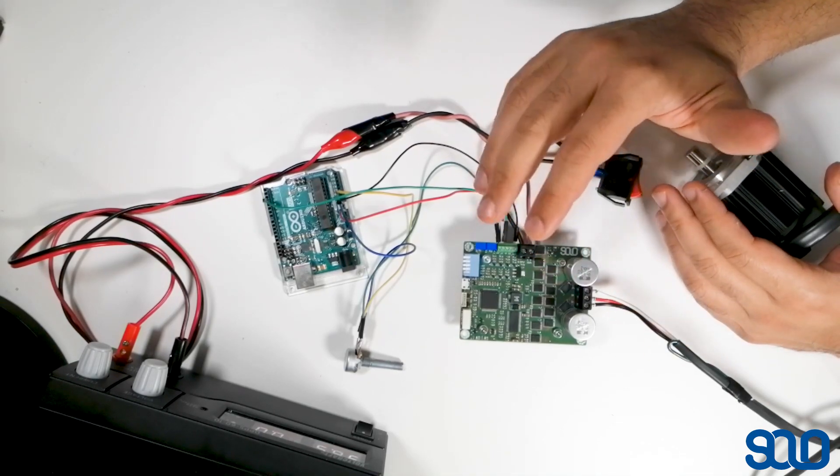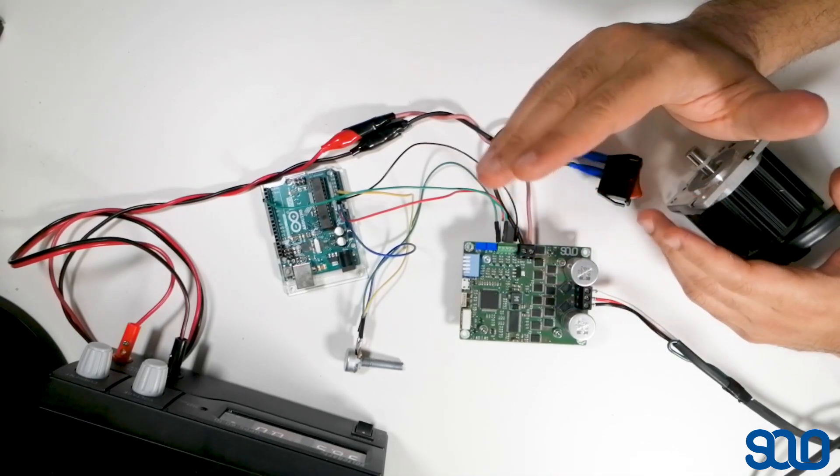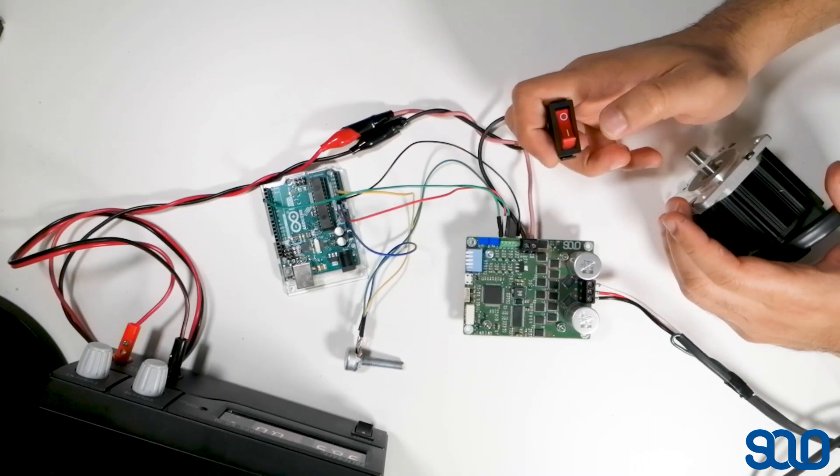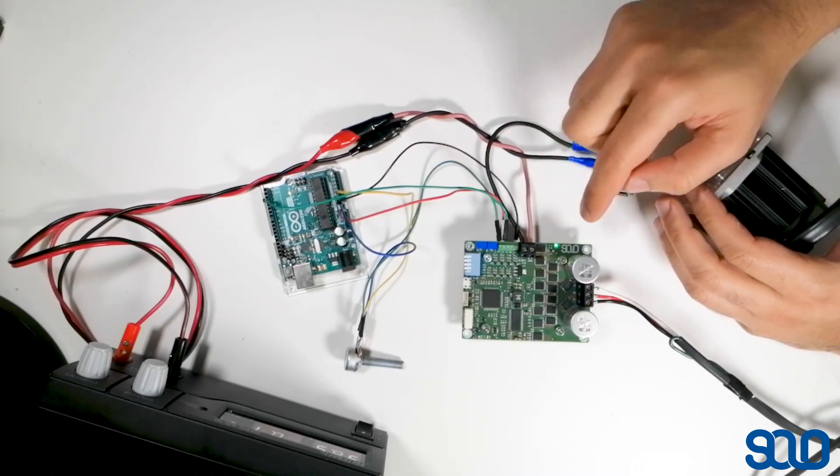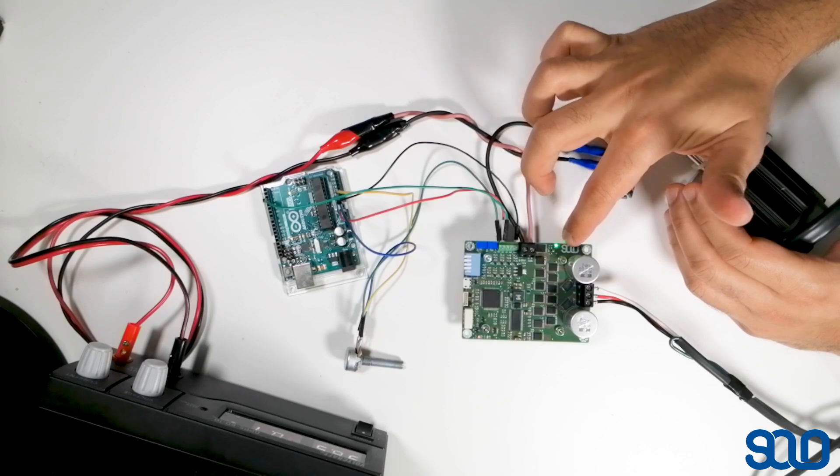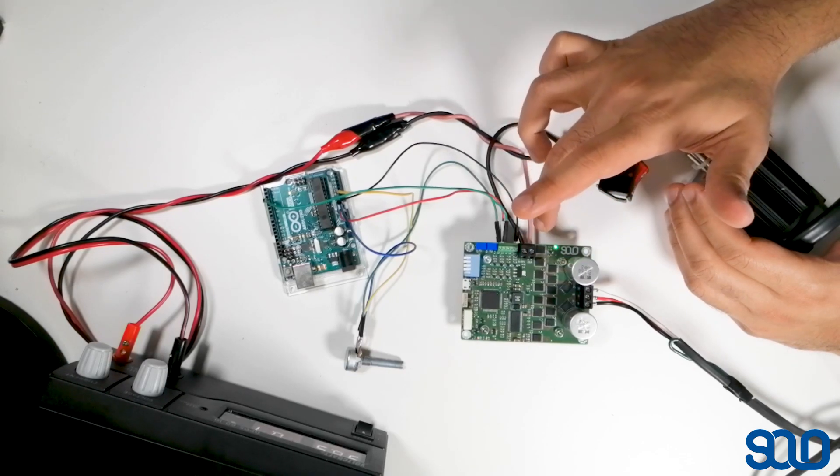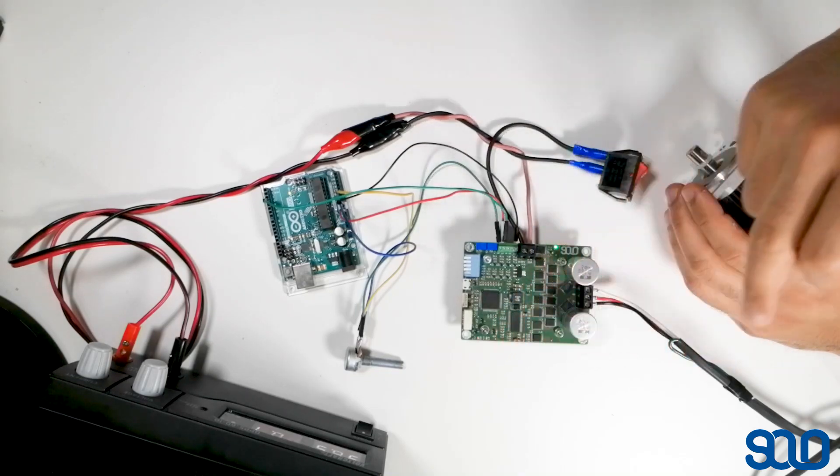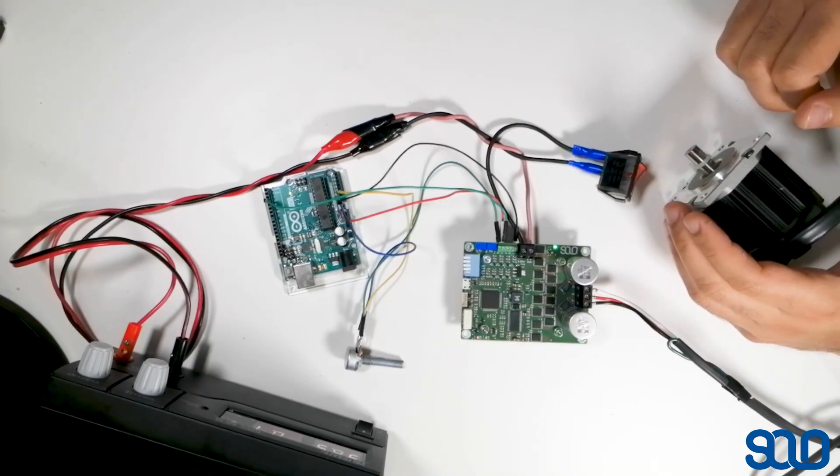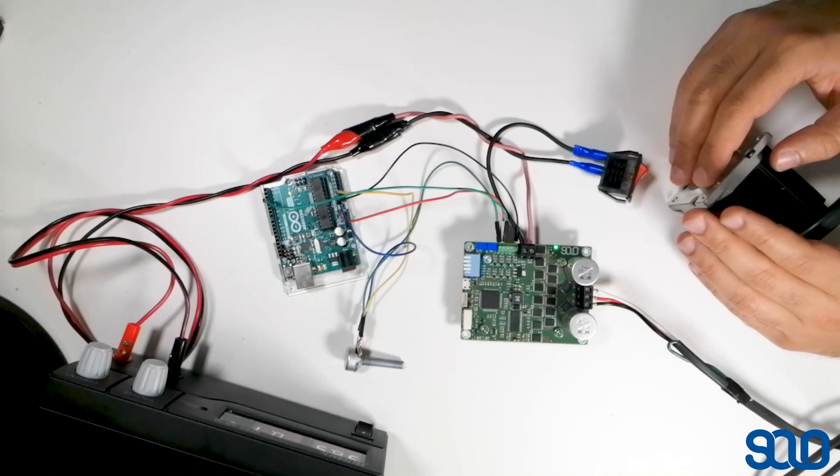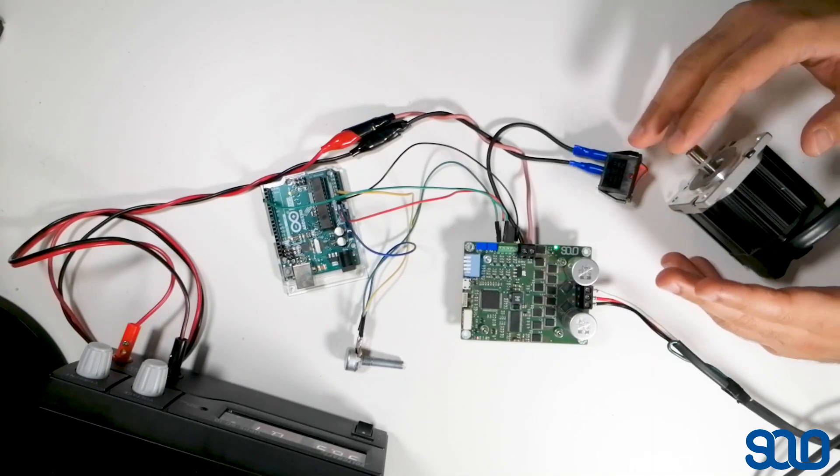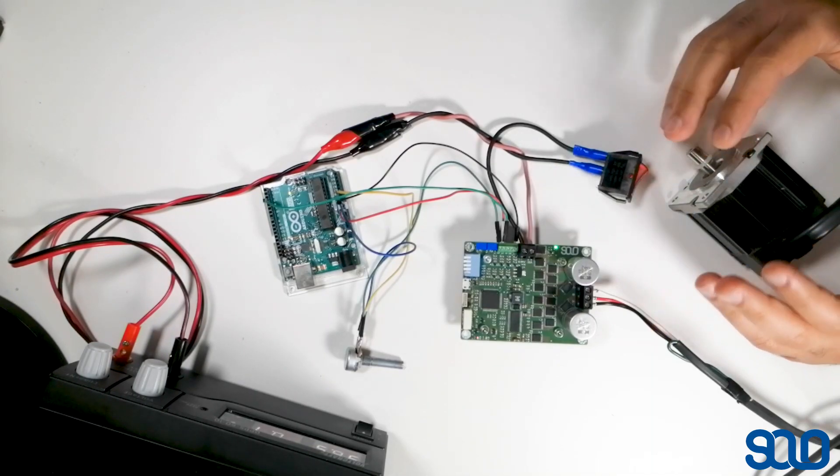When I turn on the switch the Arduino will be also turned on through SOLO because SOLO provides a five volt one amp output which you can connect to any kind of peripherals like Arduino or Raspberry Pi. When I do that you're going to be able to see a green light down here which indicates the correct connection of the power and also a blinking LED here. This LED shows that the SOLO is operating in a normal condition, there is no error or anything like that.